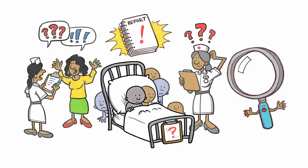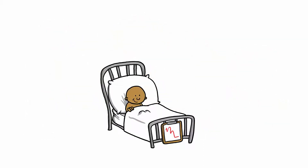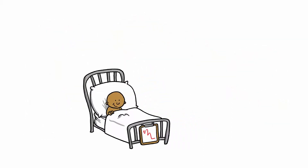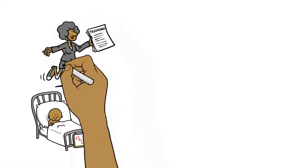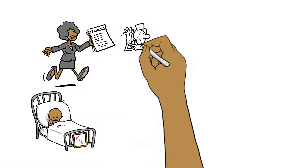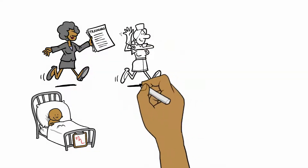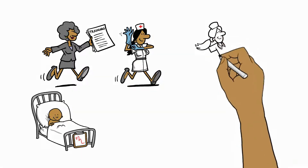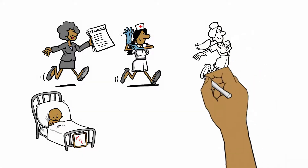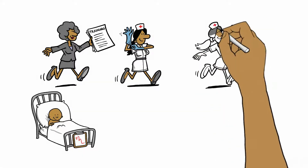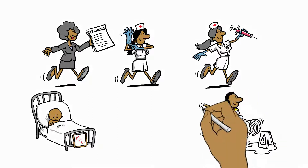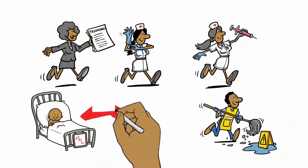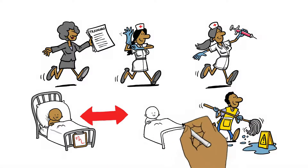This information enabled outbreak response actors to take specific and targeted actions quickly. These included improved training and health promotion for recognising Ebola symptoms in children, and increased resources for prevention of transmission, such as promotion of vaccination for children, decontamination, and reduced bed sharing.